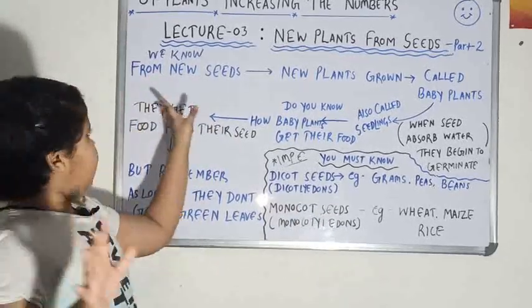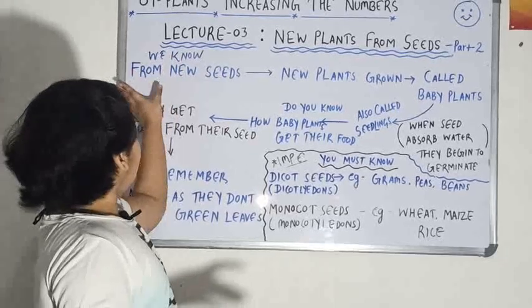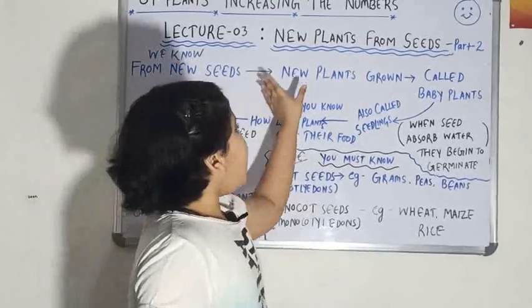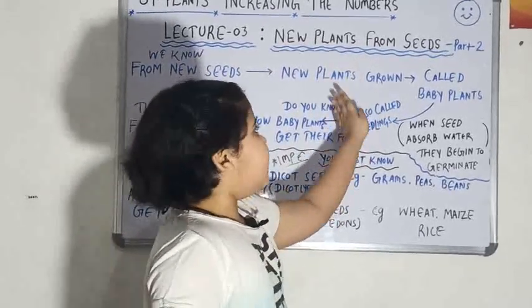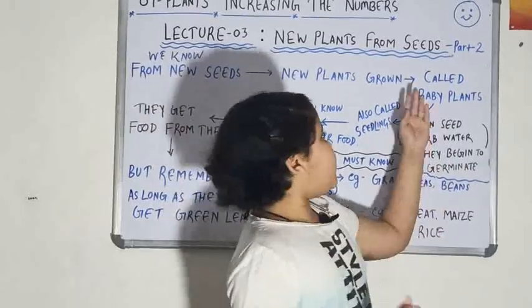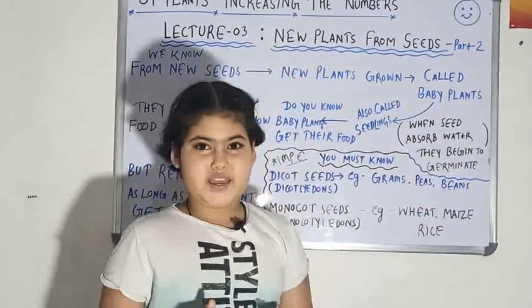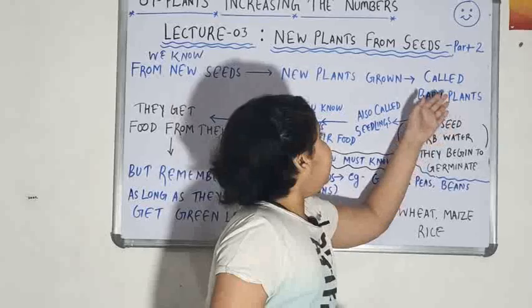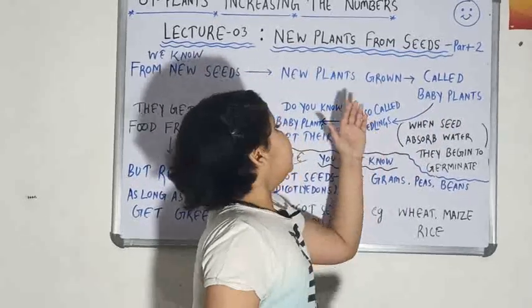See we know that from new seeds a new plant grows and that new plant is known as a baby plant. And the baby plant is also called seedling.